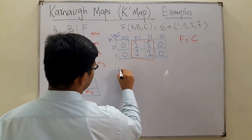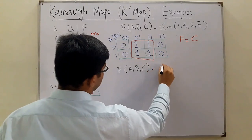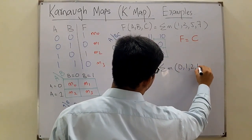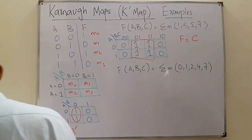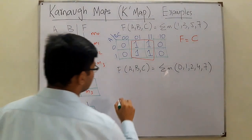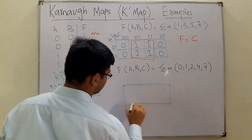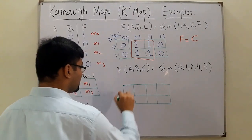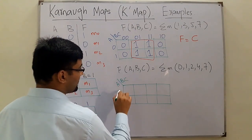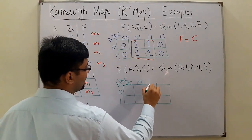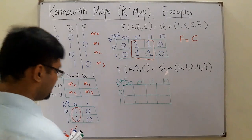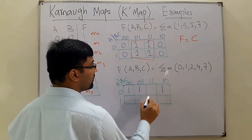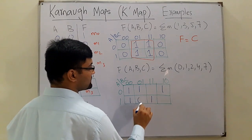Another example: a three-variable function f(A, B, C) equals summation of min terms 0, 1, 2, 4, and 7. You draw the K-map. m0 is high, m1 is high, m2 is high, m3 is low, m4 is high, m7 is high, and the others are low.